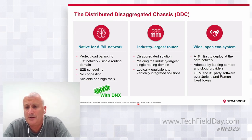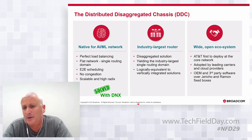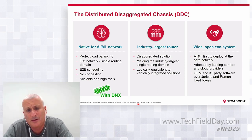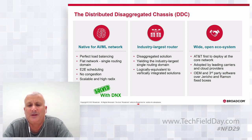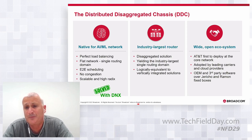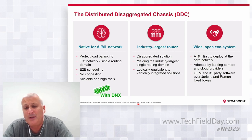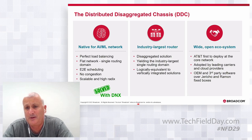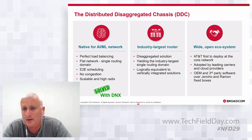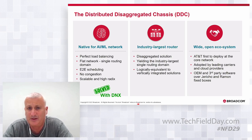This creates the largest router possible. You can arrange the different boxes — called NCF and NCP — to increase scale as needed. This is not just a concept; it's already in deployment. It was first announced by AT&T a couple of years ago, and since then many other customers have been deploying and designing DDC systems. We have a wide ecosystem for both hardware and software design of these DDC systems, and AI/ML workloads are proven and tested by our customers.